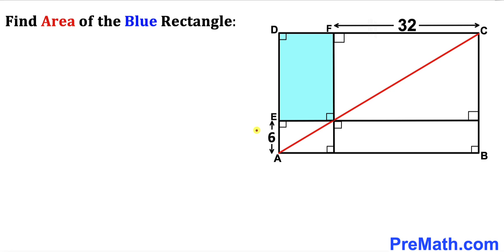Welcome to pre-math. In this video we have got this big rectangle ABCD, as you can see in this diagram, such that AC is its diagonal. Moreover, this line segment CF is 32 units whereas this line segment EA is 6 units, and now we are going to calculate the area of this blue shaded rectangle.